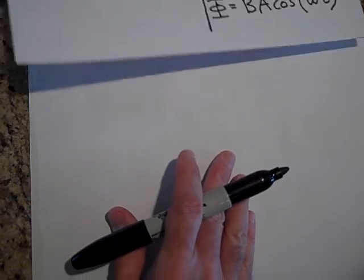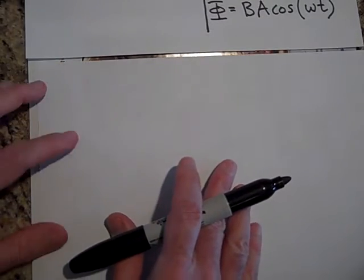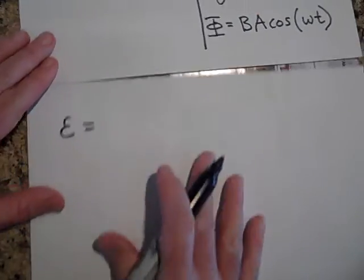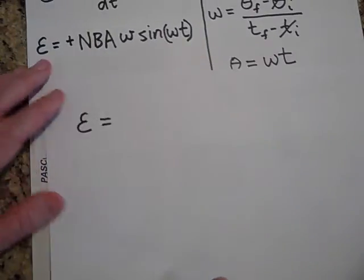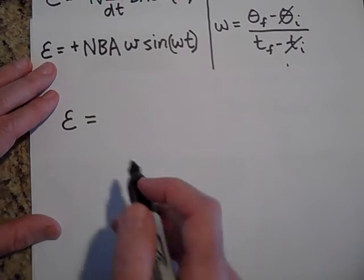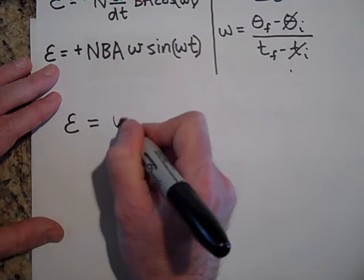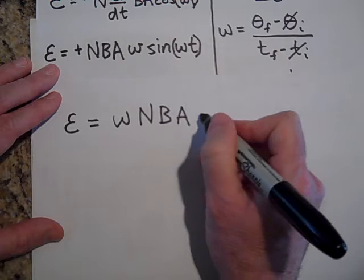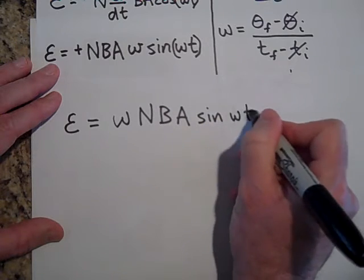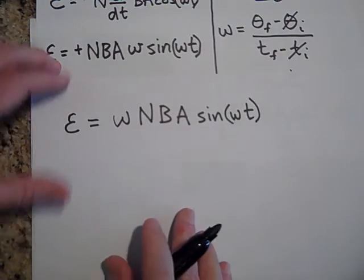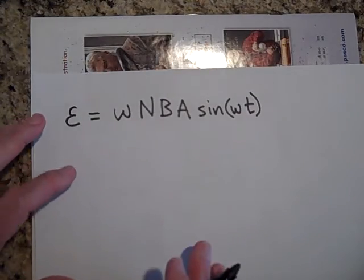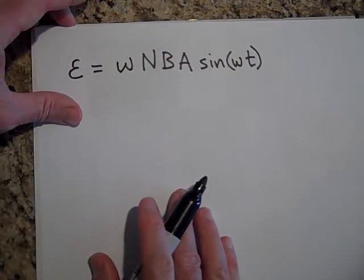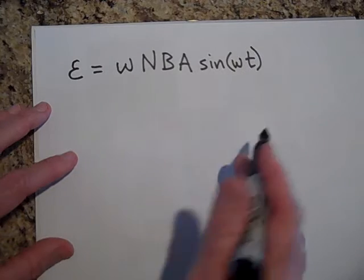And I'm going to rewrite that just on its own sheet of paper, and then let's see if we can make sense of it. The EMF that's induced by spinning a bunch of coils of wire through a magnetic field is going to be equal to, I'm going to write it a little differently: ω N B A sine omega T. And the reason I wrote that a little differently is because WNBA sounds like the Women's National Basketball Association. It's just a nice way to remember it.